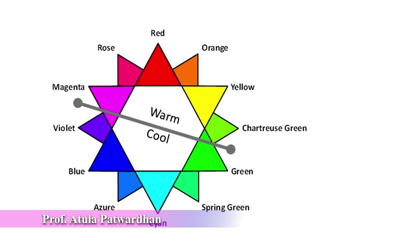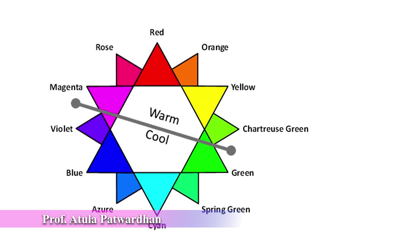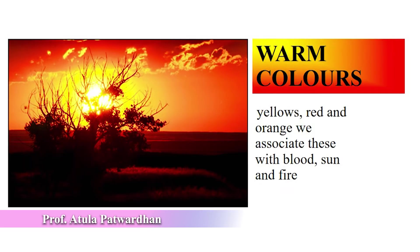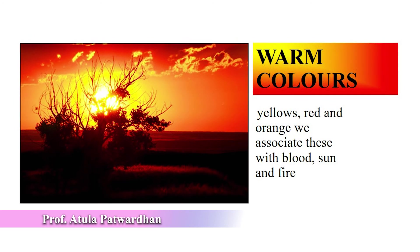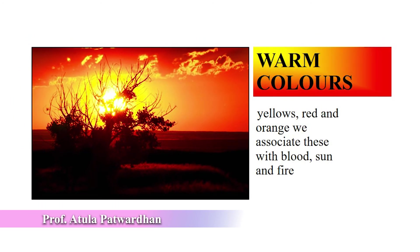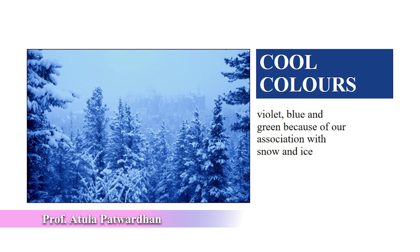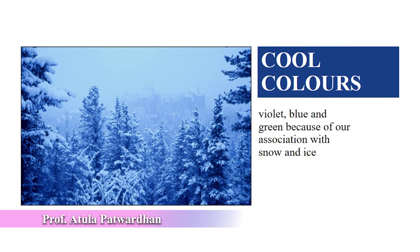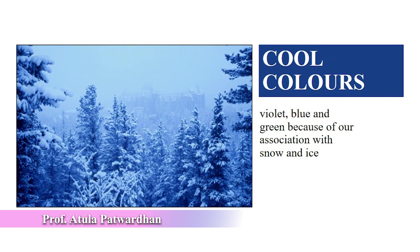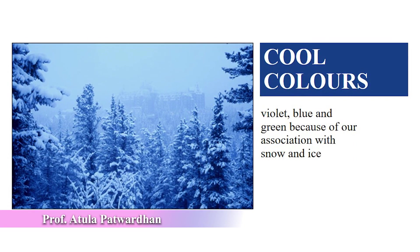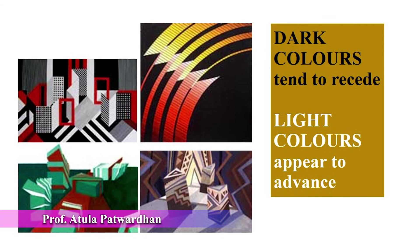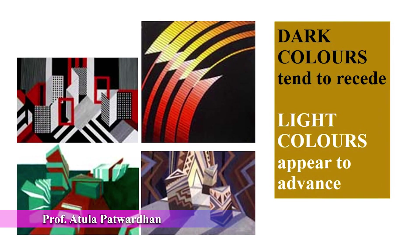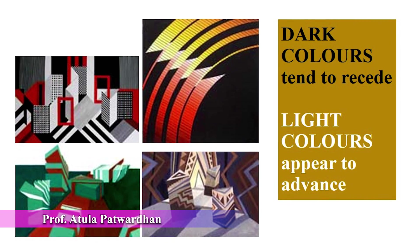There are two types of color sensations we perceive from colors: warm colors and cool colors. Warm colors are sensations which we associate with warmth — yellow, red, and orange — which we associate with blood, sun, and fire. Cool colors are the colors we associate with coolness: violet, blue, and green, because of our association with snow and ice. Dark and light colors create optical illusion — dark colors tend to recede and light colors appear to advance. This is all about the theory of color, and I wish this knowledge will be helpful to you and you will apply it to your academics. Thank you.